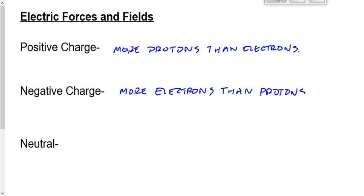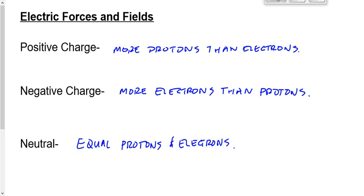If it's neutral, it doesn't mean that it has no protons and no electrons. It simply means that it has an equal number of protons and electrons. We're going to learn in a few minutes how you make something positively charged. We know it's positive if it has more protons than electrons. How do you make it have more protons than electrons? It's negative if it has more electrons than protons. We'll deal with that in just a few moments.